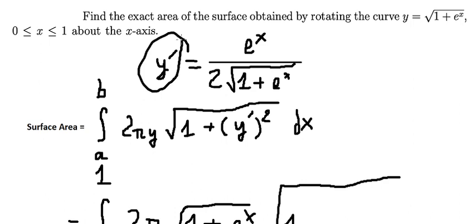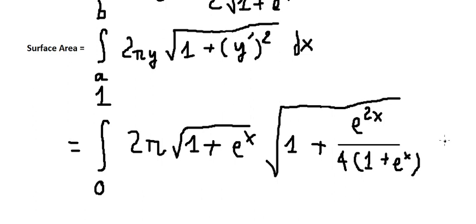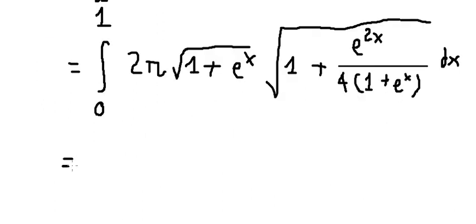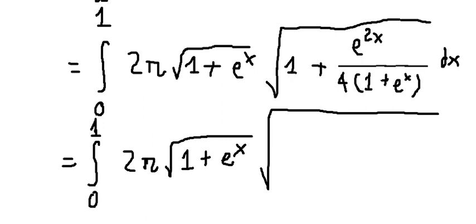We square the derivative and substitute it into the formula. Now we have the integration from 0 to 1 of 2π times the square root of 1 plus e to the power of x. We apply a common denominator to simplify the expression inside the square root.